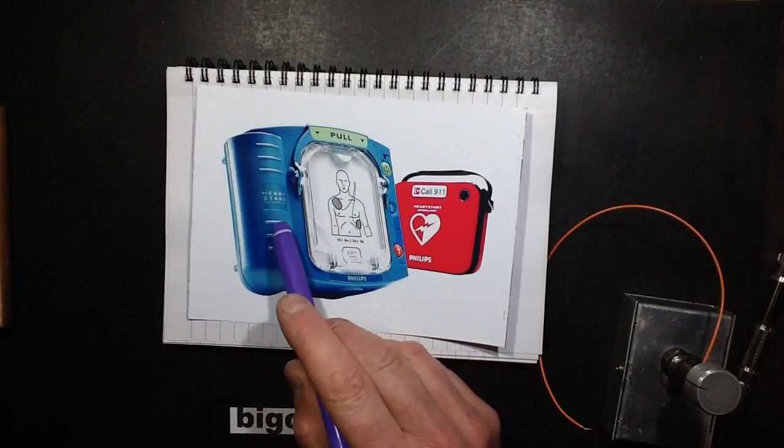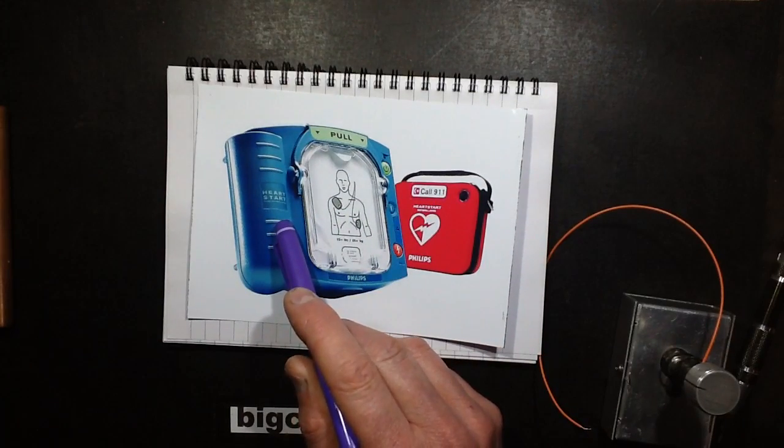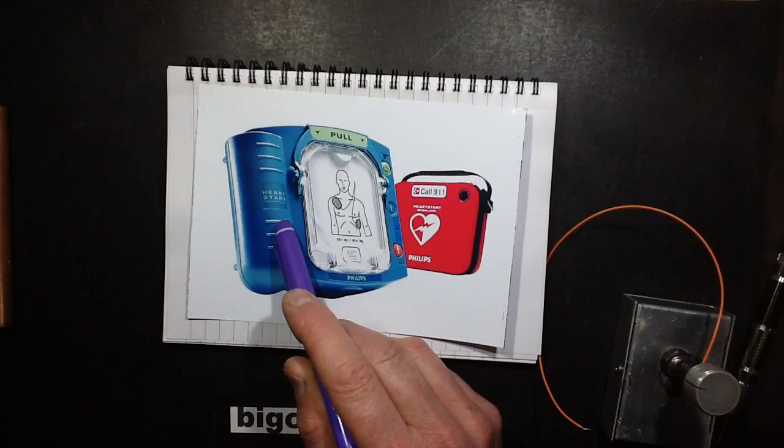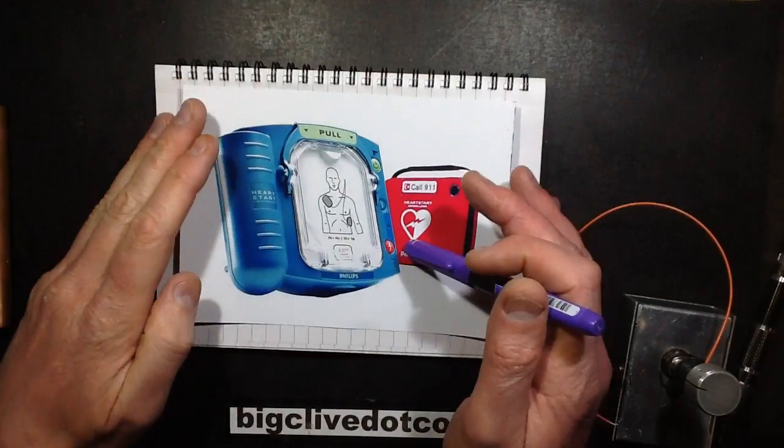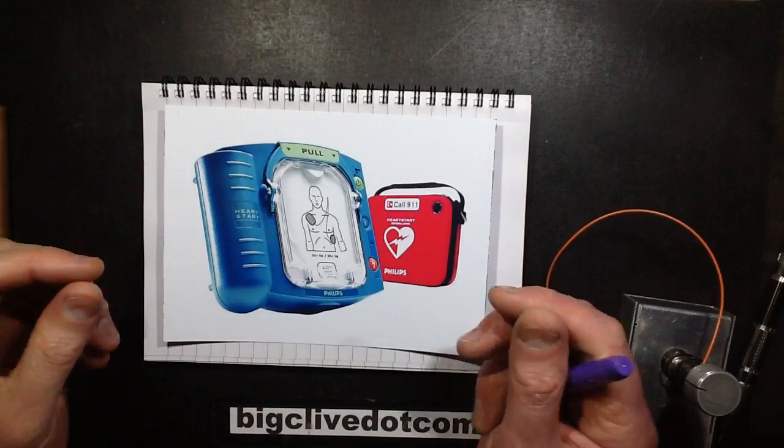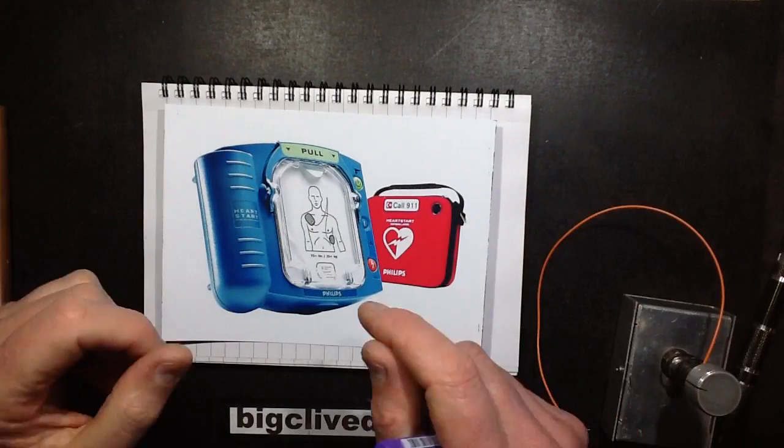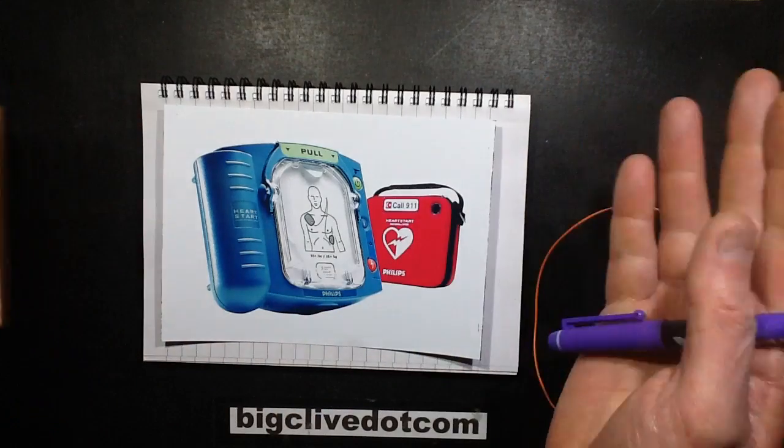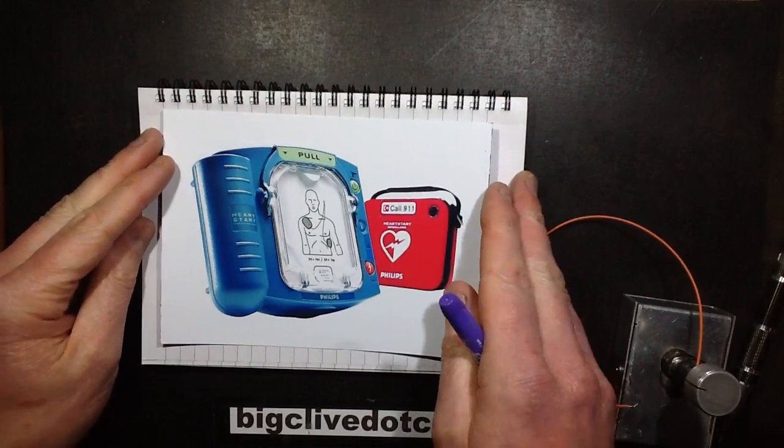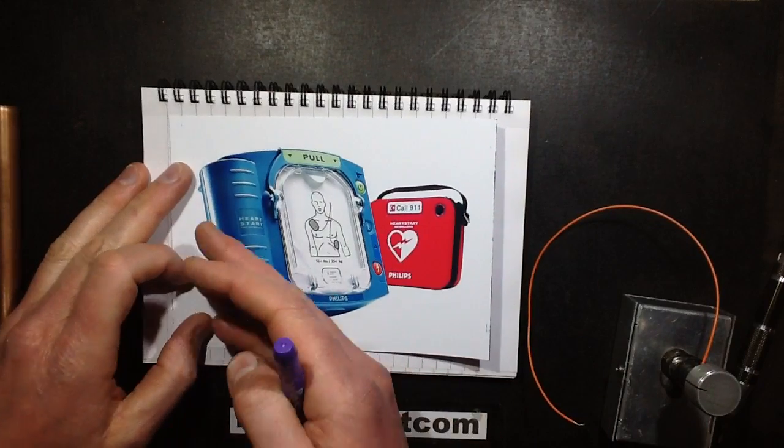Now defibrillators were first invented for the power distribution industry because of the high fatality rate of linemen. And back in the earliest days when they were first being developed, basically it was a big metal trolley with a transformer on it and two pads. And it was just so barbaric, but I guess it may have worked in some instances.